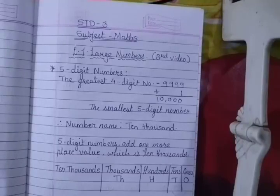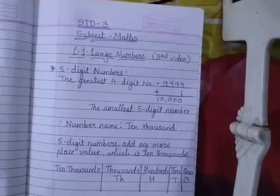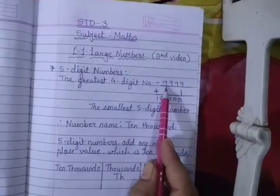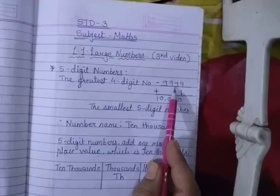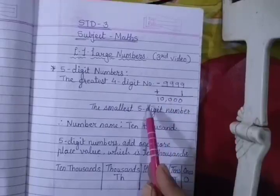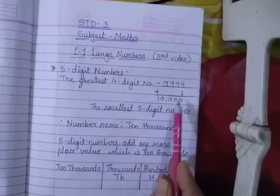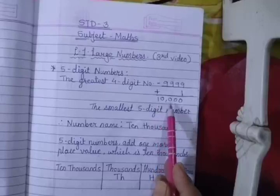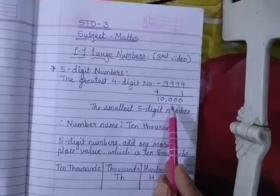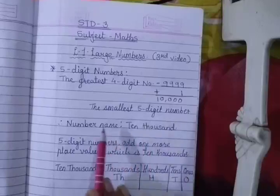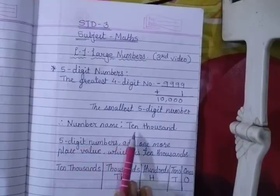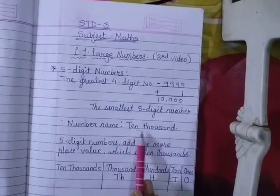Our next concept is 5-digit numbers. The greatest 4-digit number is 9,999. When we add 1 to it, we get 10,000, which is the smallest 5-digit number. While writing the number name, we write it as ten thousand.